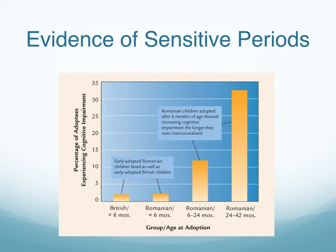You should keep in mind that this is a correlation — it's not an experiment. We can't say definitively that being in the orphanage causes the cognitive impairment, although we feel pretty confident that's what's going on. Since it's a correlation, it could theoretically go the other way: the more cognitively impaired the child is, the less likely they may be to get adopted at an early age.